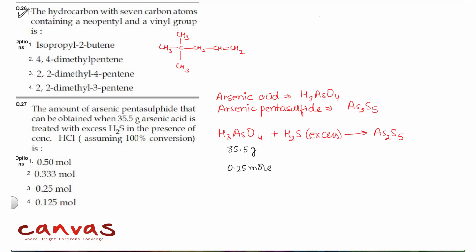Question number 26. The hydrocarbon with seven carbon atoms containing a neopentyl and a vinyl group is 4,4-dimethylpentene.